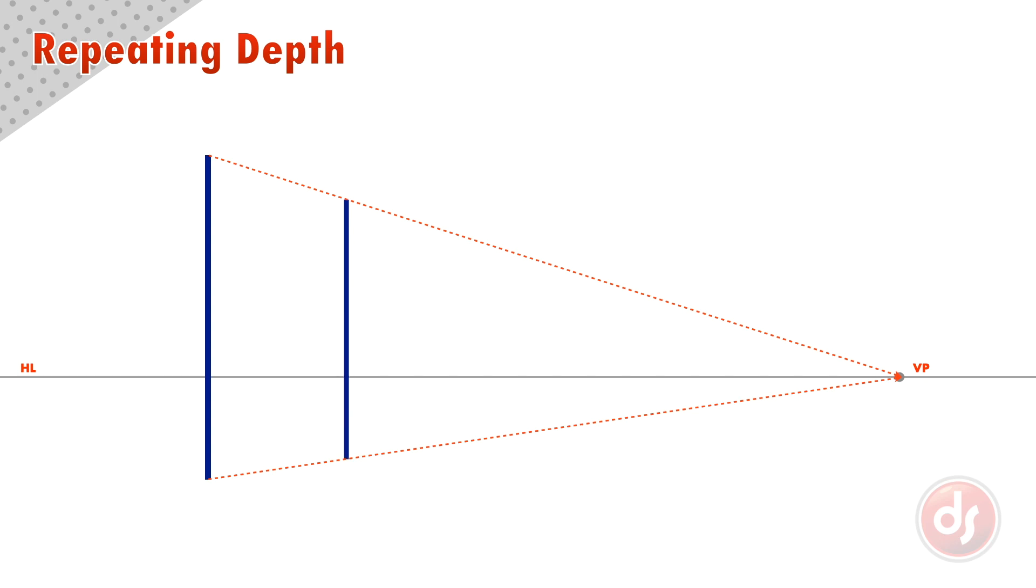We need to start with the depth between two objects that we choose. Draw a horizon line and a single line representing a pole that is the position of the first object. Then place a vanishing point and take the top and bottom of the pole to it. Then draw a second pole as far from the first as you want.